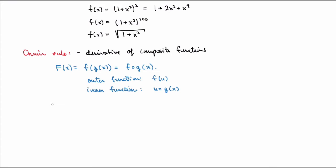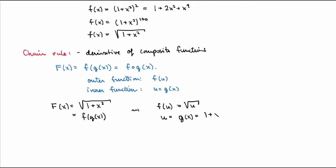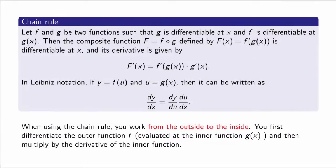So if we go back to our previous example, F(x) = √(1 + x²), and set that to f(g(x)), then the outer function is just the square root function, while the inner function is g(x) = 1 + x². The chain rule states: if F(x) = f(g(x)) and everything is differentiable, then F′(x) = f′(g(x)) · g′(x) — the derivative of the outer function evaluated at the inner function, times the derivative of the inner function.